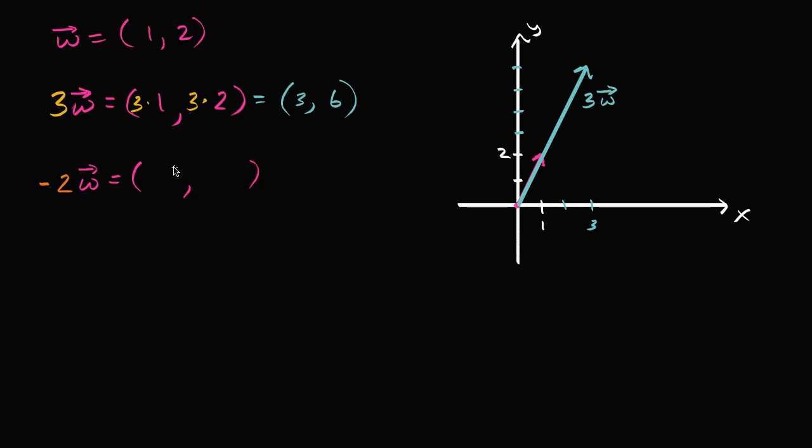Well, we would multiply each of our components by negative two. So it would be equal to negative two times one for the x component. And then the y component would be negative two times two. And so this is going to be equal to the vector negative two comma negative four.